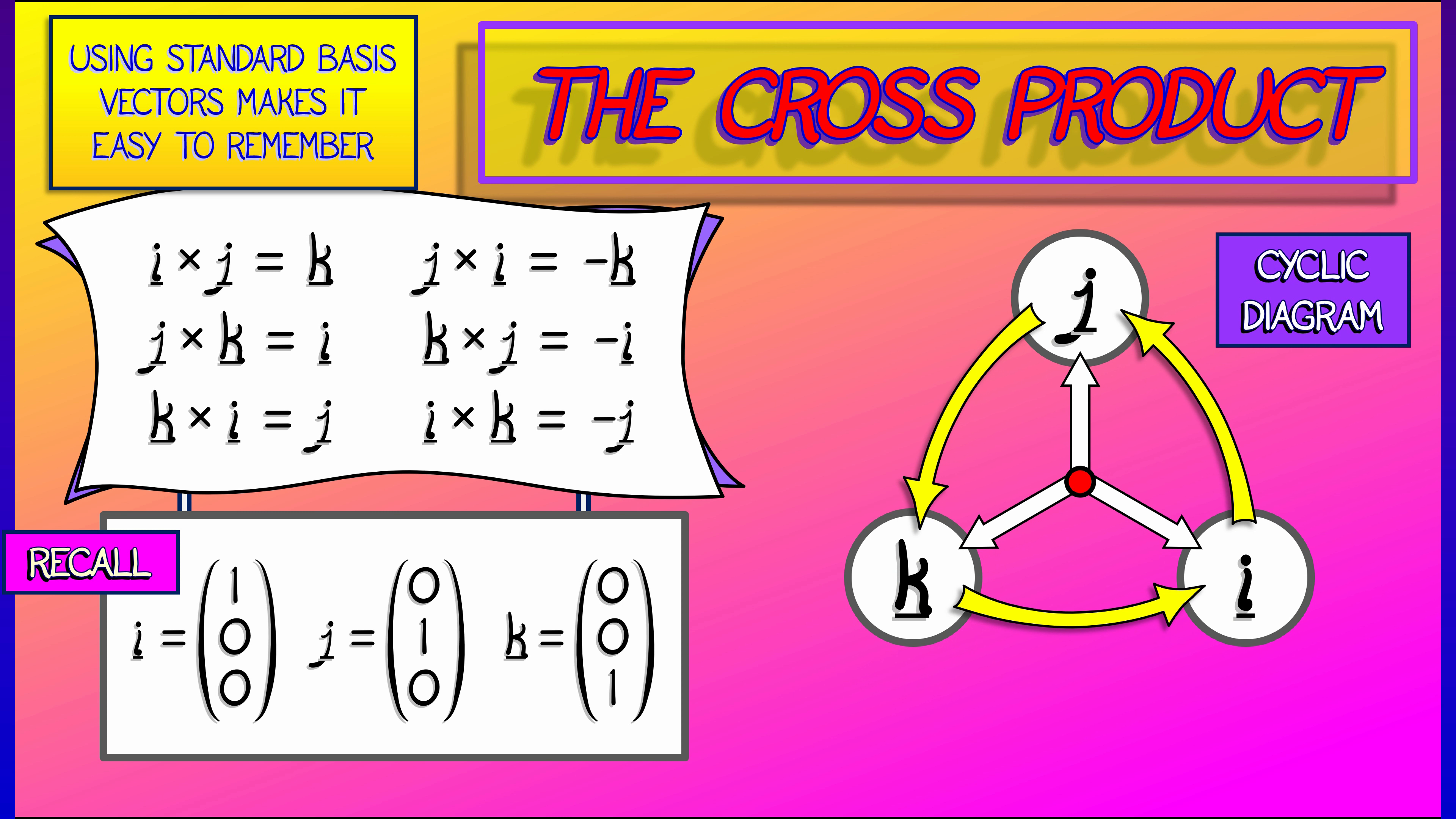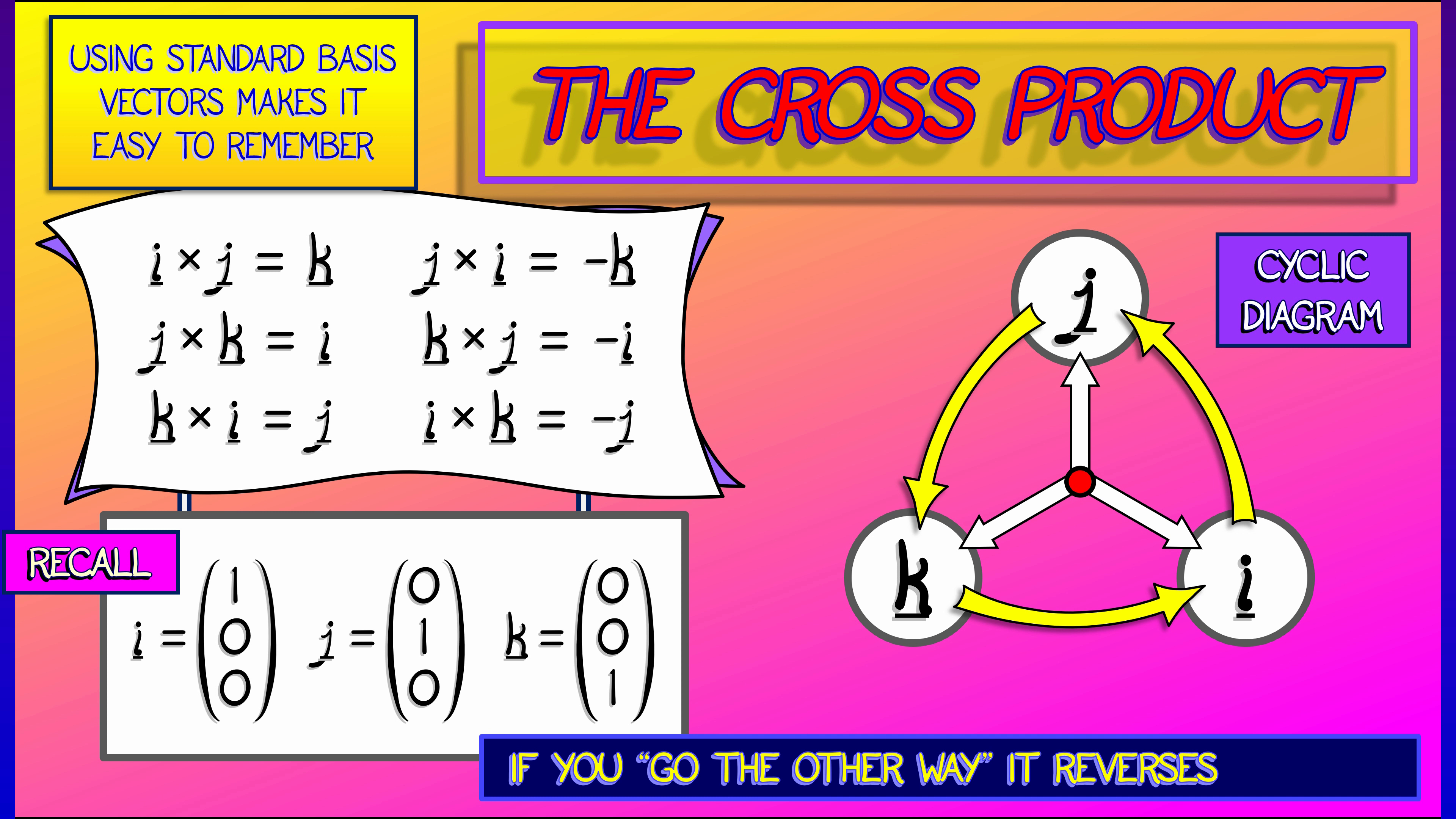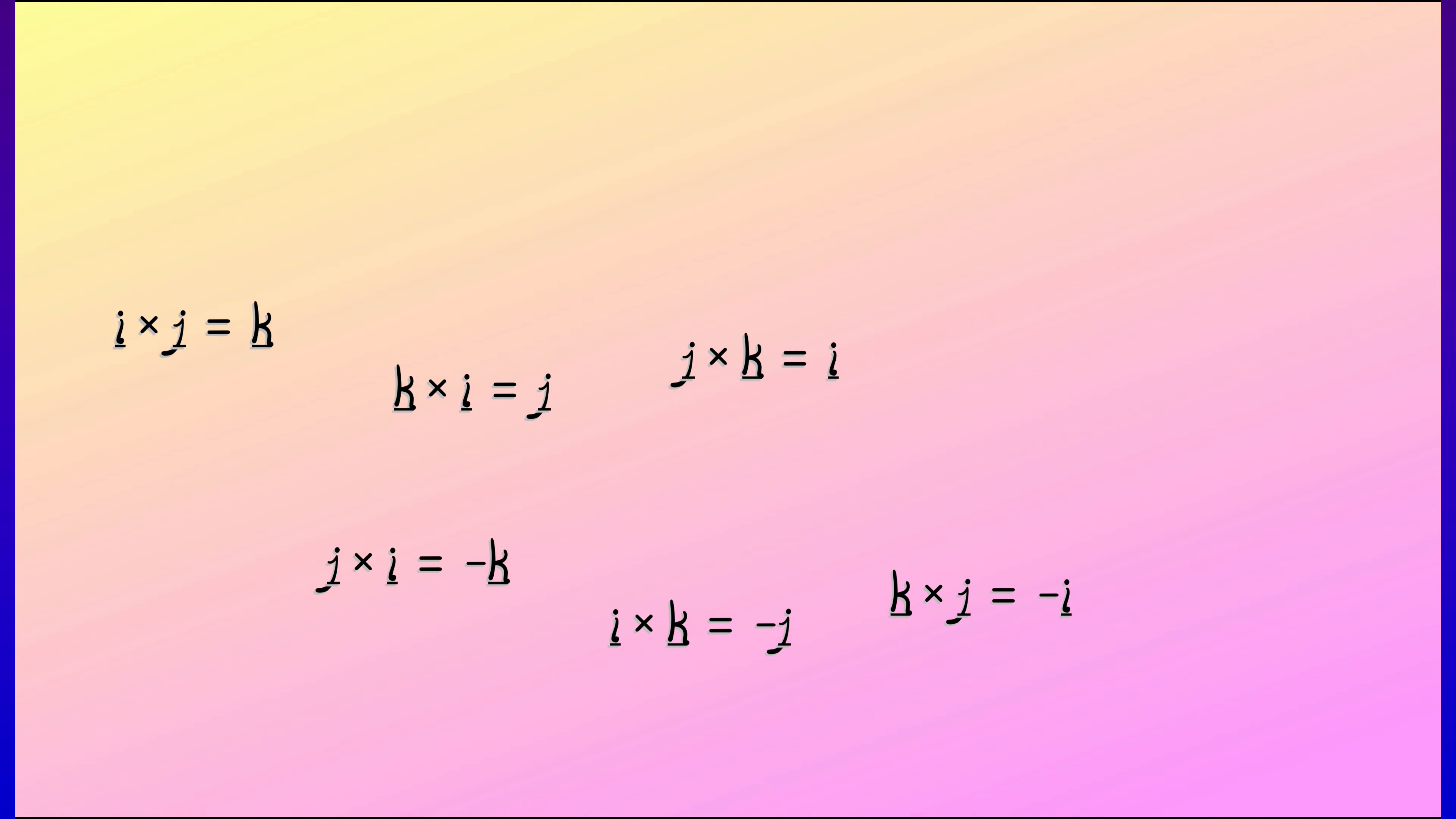Oh, here's another long list of things to memorize, but this is not so bad because you can encode them in the following cyclic diagram. You take two of the terms, let's say k cross i, and because it follows the ordering, the orientation of this diagram, you know that k cross i is j, and j cross k is i, and i cross j is k. But if you reverse the ordering, then you get a minus sign. So i cross k is minus j.